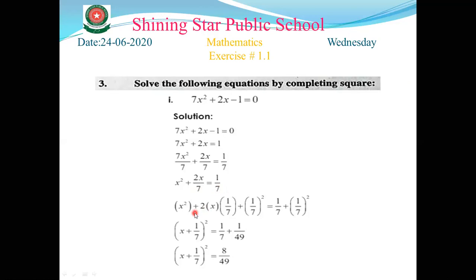Now in the next step, we add half of b squared to both sides. In this question, b is 2/7. When we divide 2/7 by 2, the 2s cancel, leaving 1/7. So we add (1/7)² to both sides.